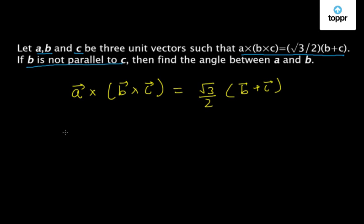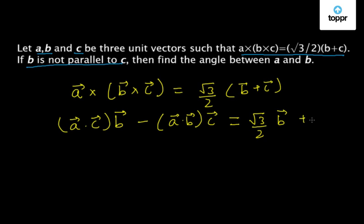So, this can be simplified as A dot C into B minus A dot B into C and the right hand side can be written as root 3 by 2 into B plus root 3 by 2 into C.